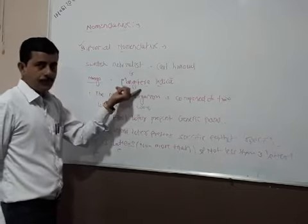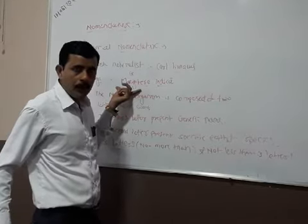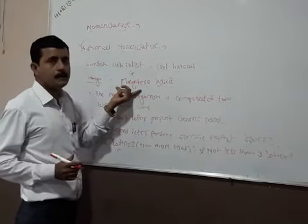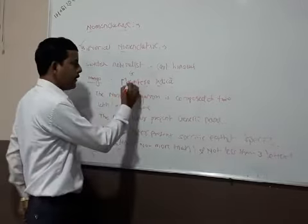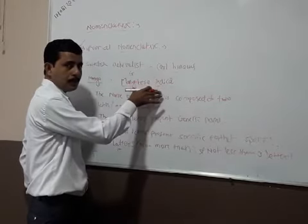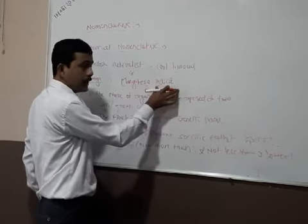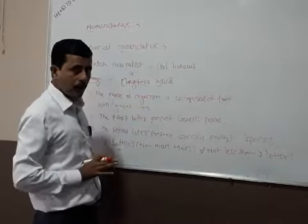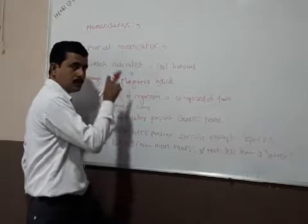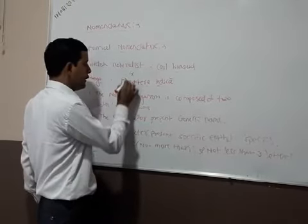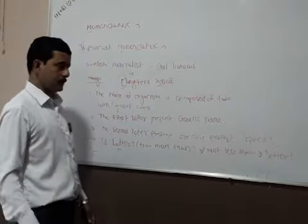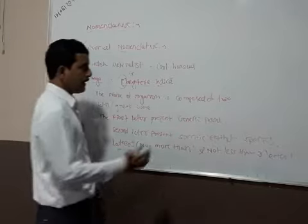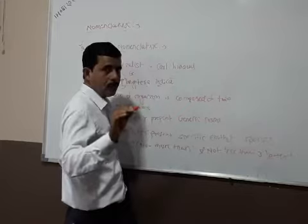If the binomial name of an organism is written in a handwriting fashion, it must be underlined separately. If we read it in simple form, we separate the words separately, and the generic name always starts with a capital letter.